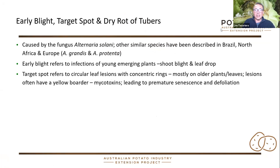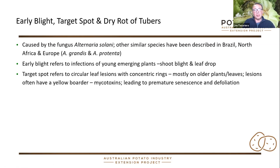There are similar species that have been shown to be key in other countries like Brazil, North Africa, and Europe, where they've now genetically split Alternaria solani into other couple of species names. It's not so important in Australia, although it probably means, as I've been finding with a lot of stuff in disease pathology, the more genetics people look at, the more they split species up. It's quite possible there are other species associated with target spot disease and early blight.